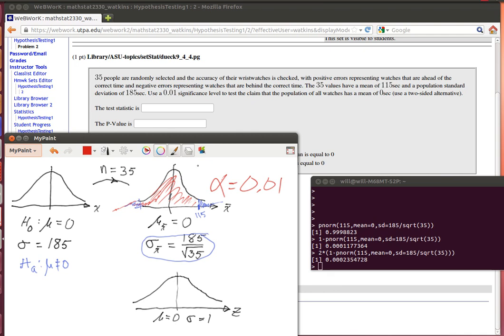We could have also found that p-value in the following way: we could have taken this 115 and translated it down here. That's the test statistic down there, and that's easy to find. It's going to be 115 minus the mean, which in this case is just zero, so it's just going to be 115 divided by this standard deviation.